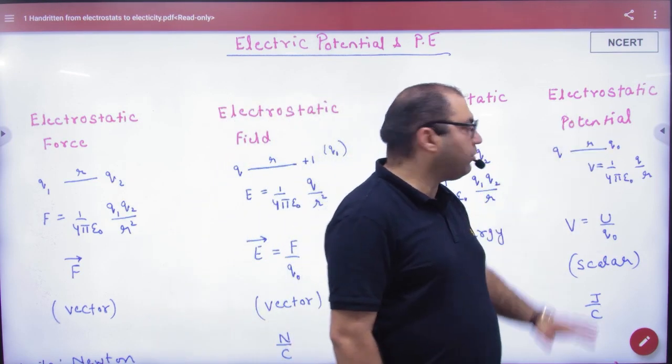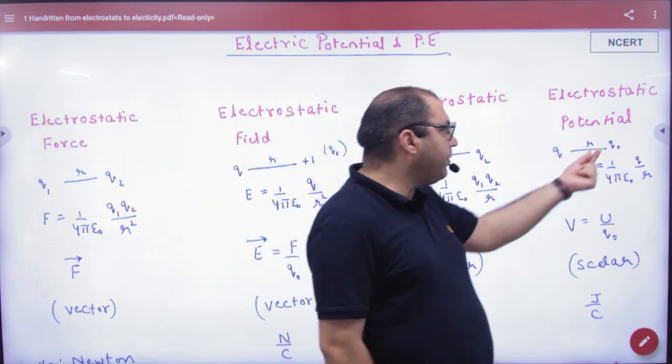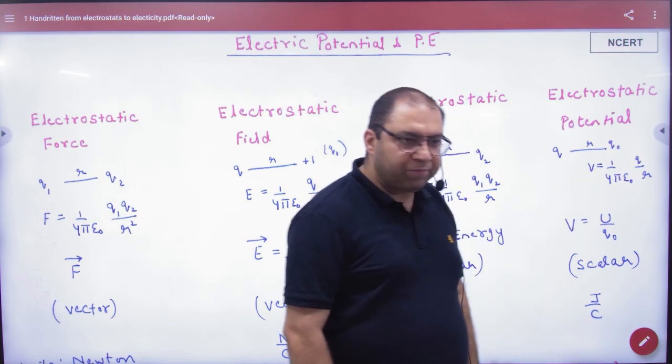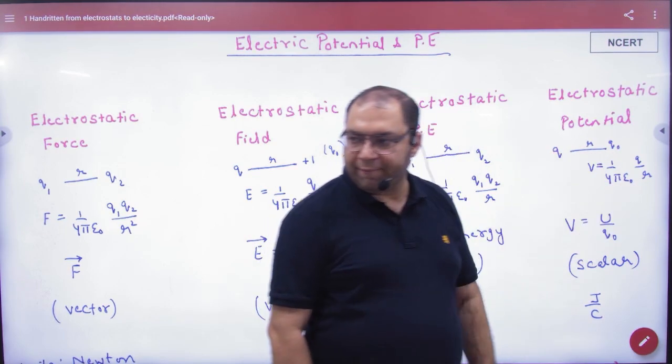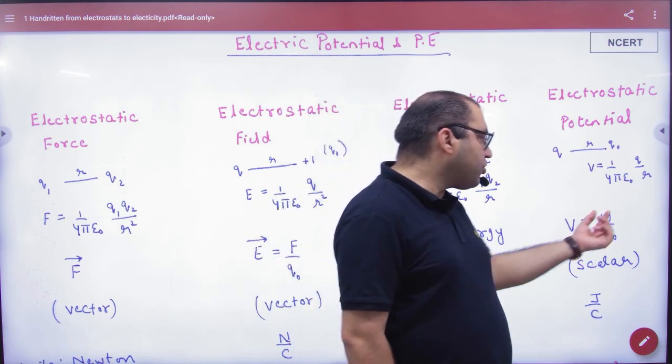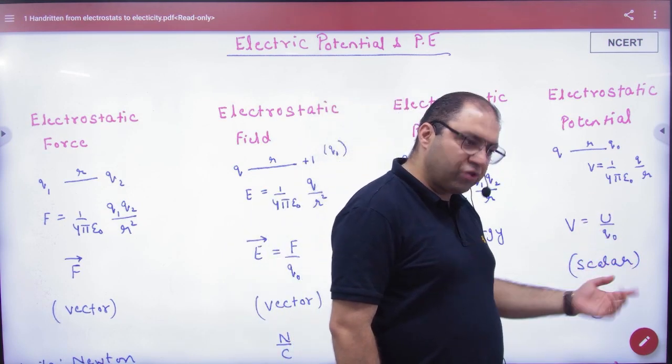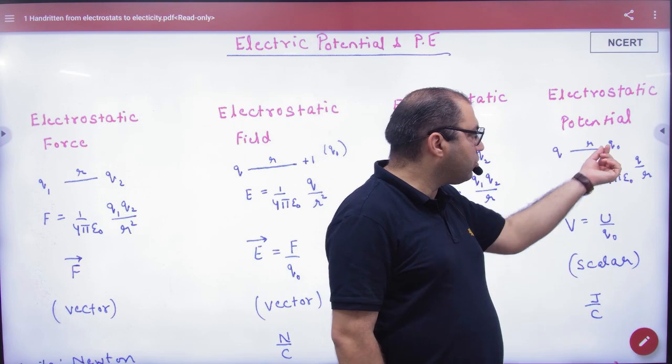Next is electrostatic potential. Where the potential is is plus 1. What is the value of q? 1 by 4 by epsilon and q by r. What is the potential energy per unit charge? What is the charge here? Q0.